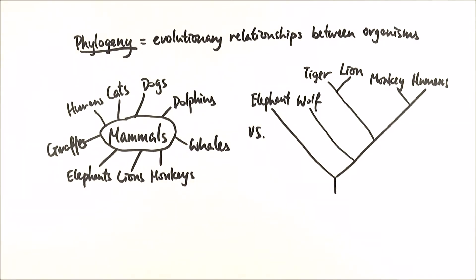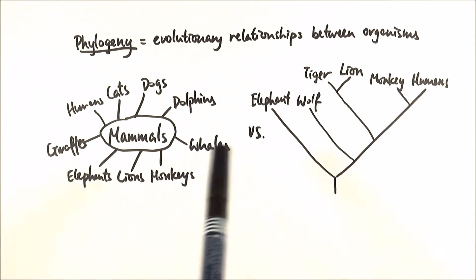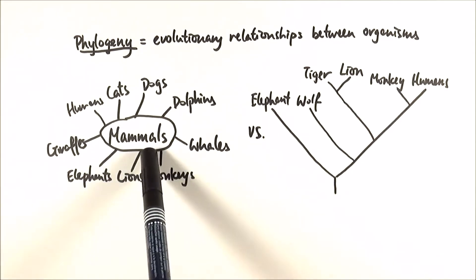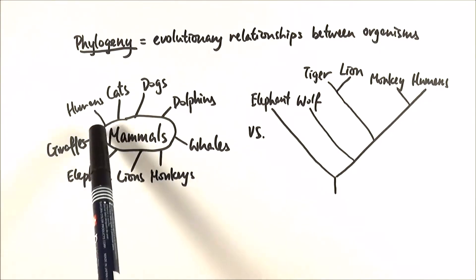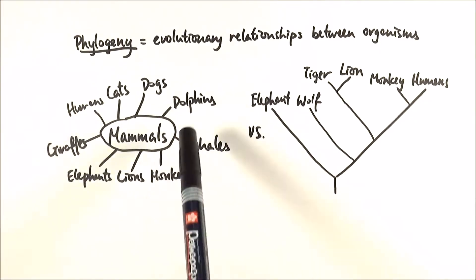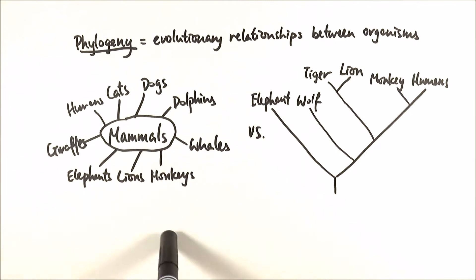One way to understand this is to think about the difference between a mind map and a phylogenetic tree. For example, if I need to classify some mammals — humans, cats, dogs, dolphins, whales, and so on — they are all mammals but they are all very different to one another.